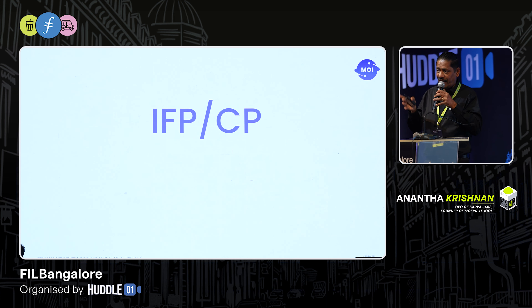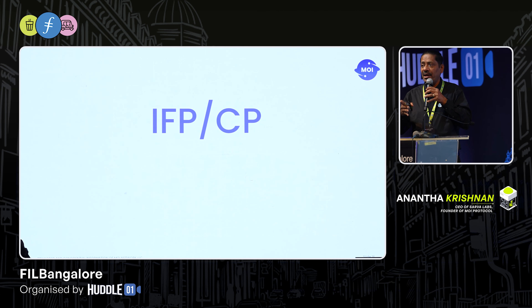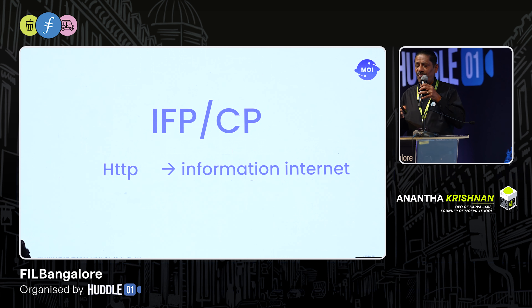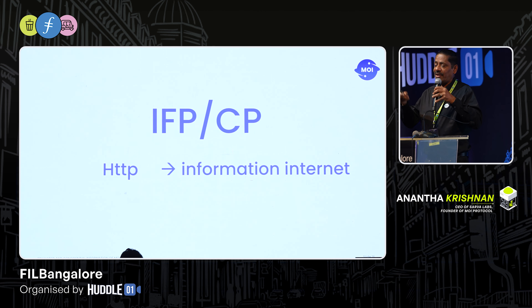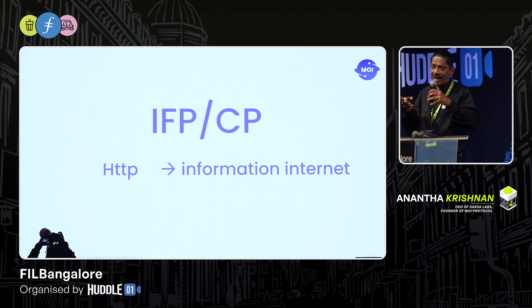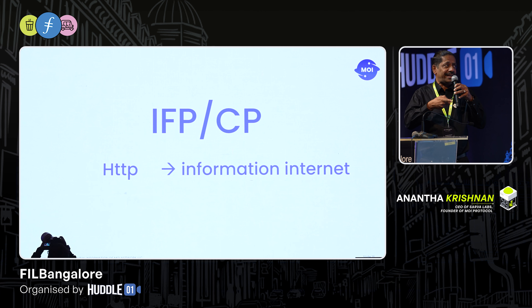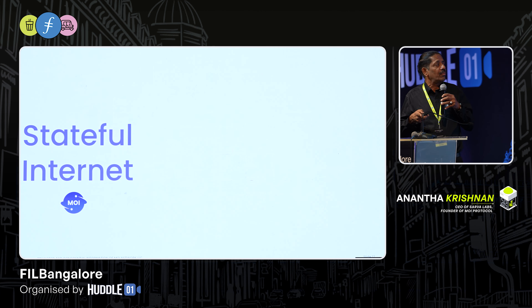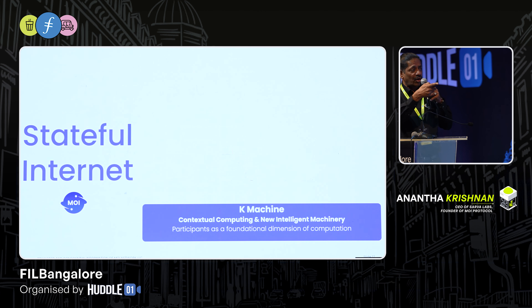Finally, once you have a state machine that does peer-to-peer value transfer, we have built something called IFPCP — the Interaction Finality Protocol or Context Protocol. State management is all about agreement. IFPCP allows you to do state management independent of the app, so all apps can work on the same network without worrying about state management. State management moves from an app level to fundamentally a network level. Just as HTTP pushed the information internet, IFPCP will push the value internet.